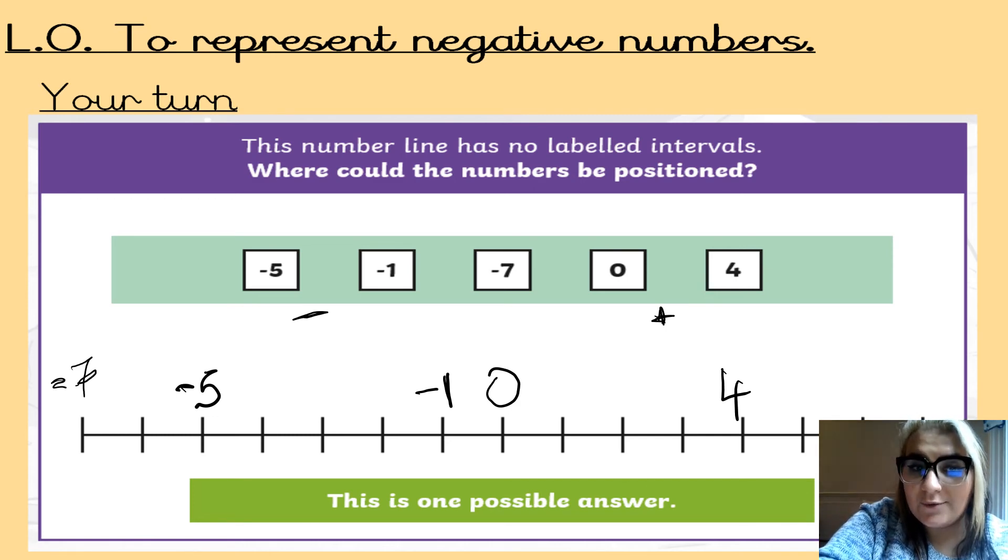there's four spaces between one, minus one, and five, and two spaces between minus five and minus seven, you've done a good job. Correct. Give yourself a tick and if not, pause me and quickly make a correction.